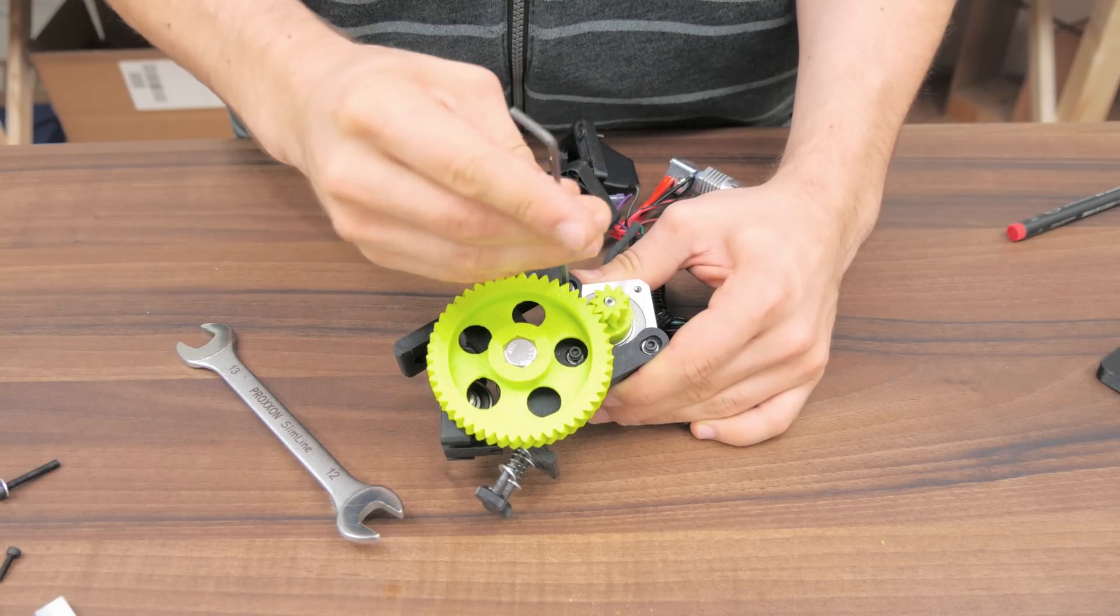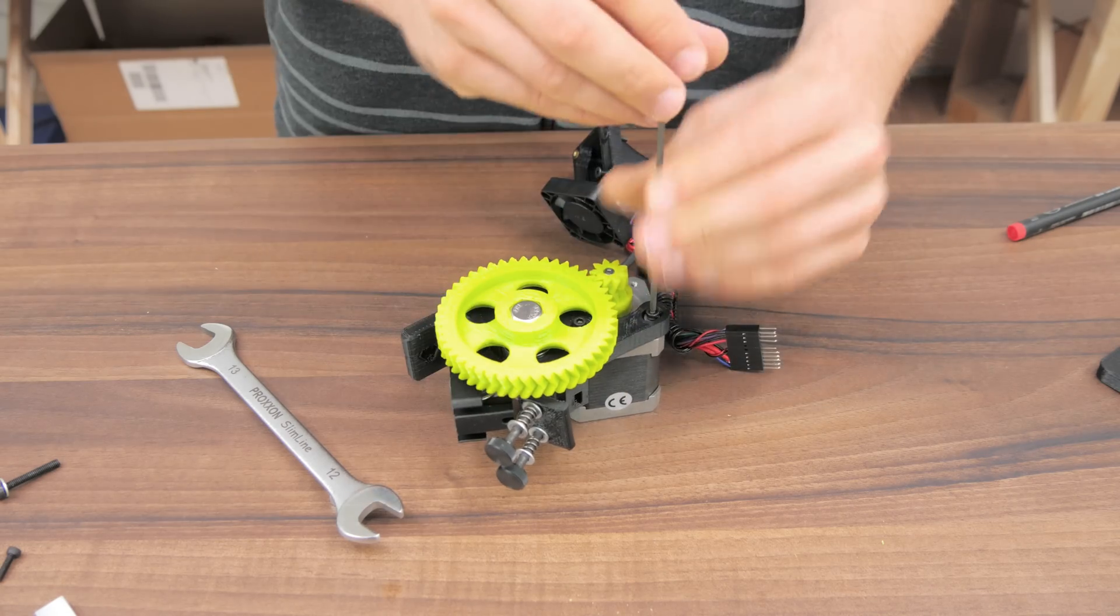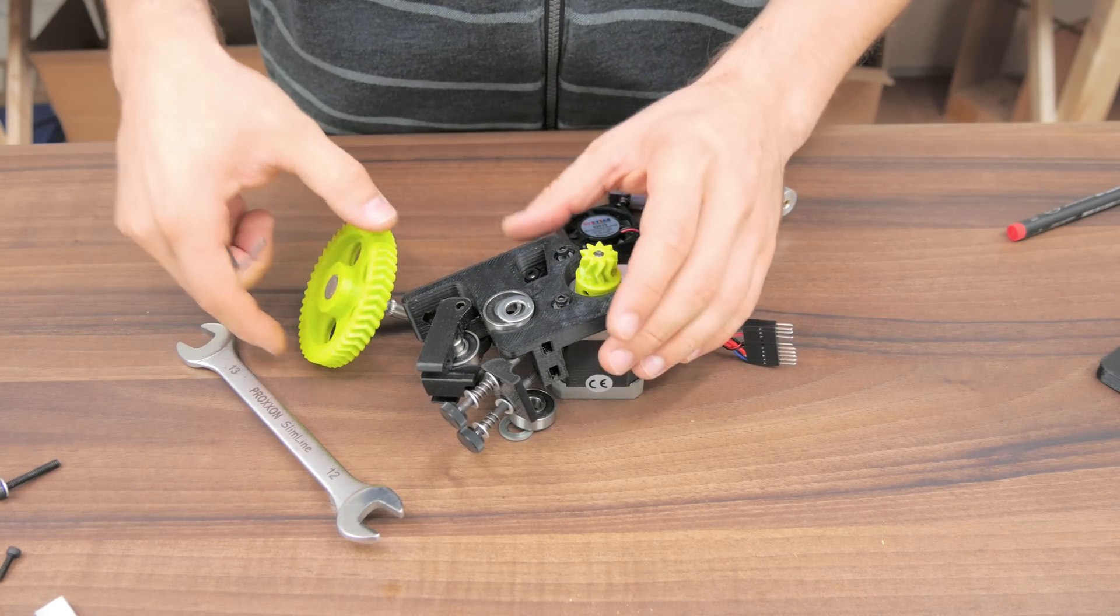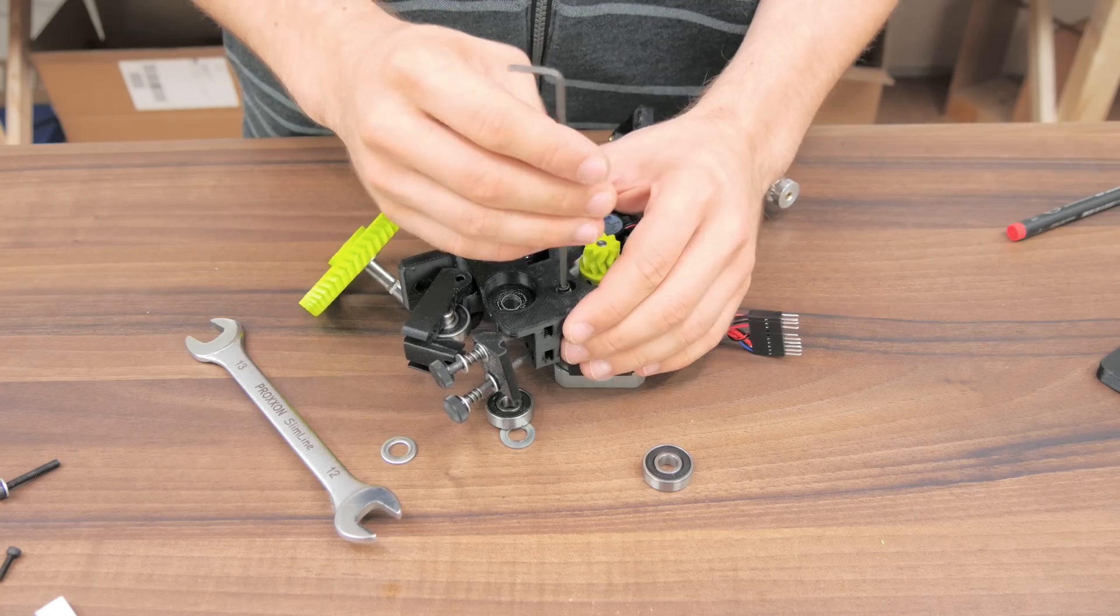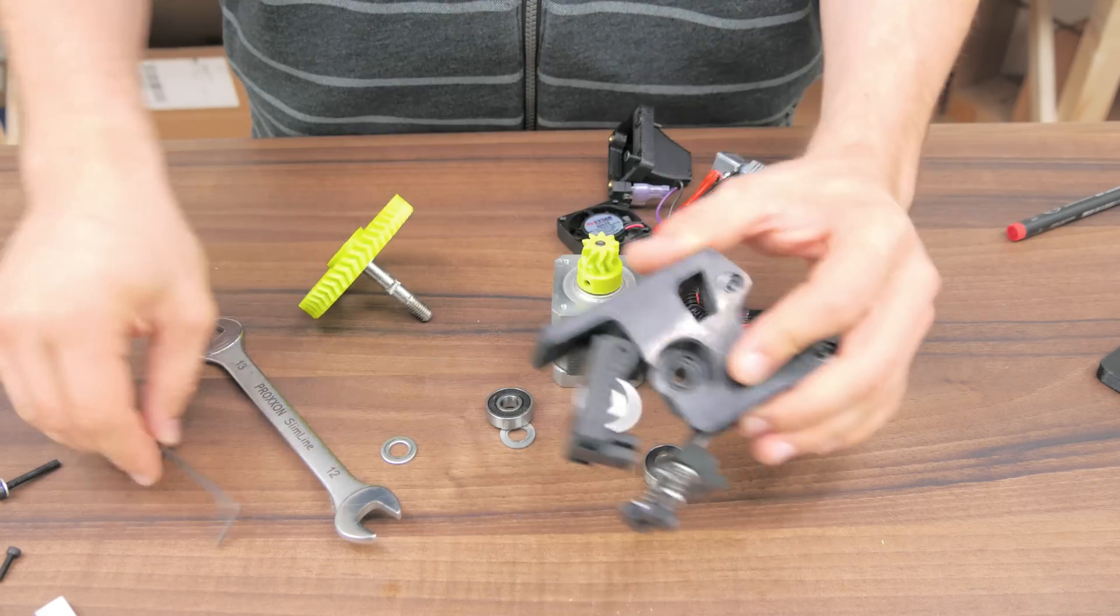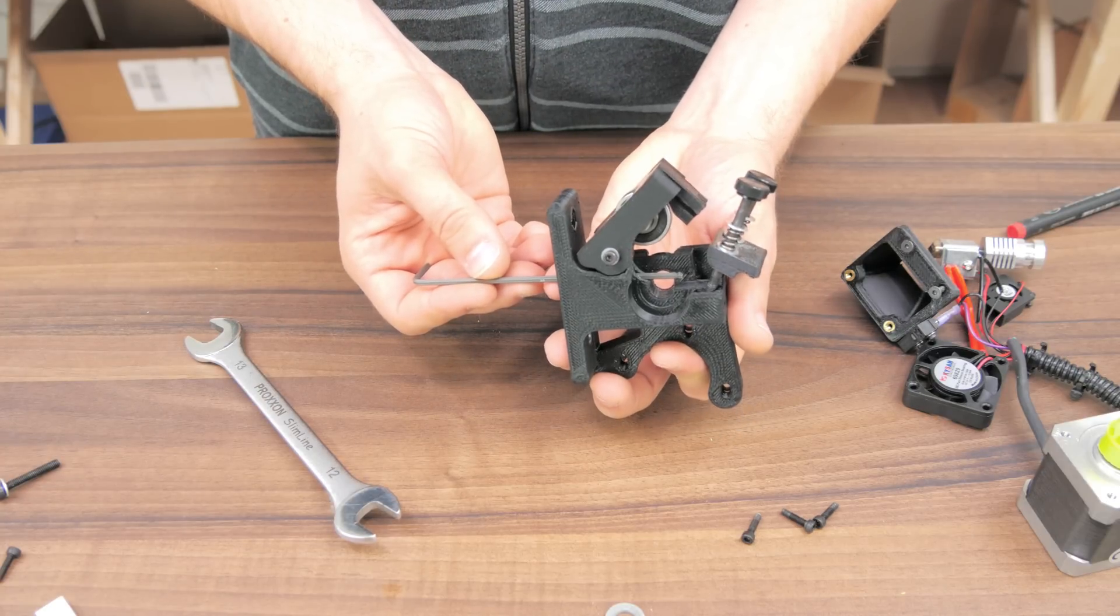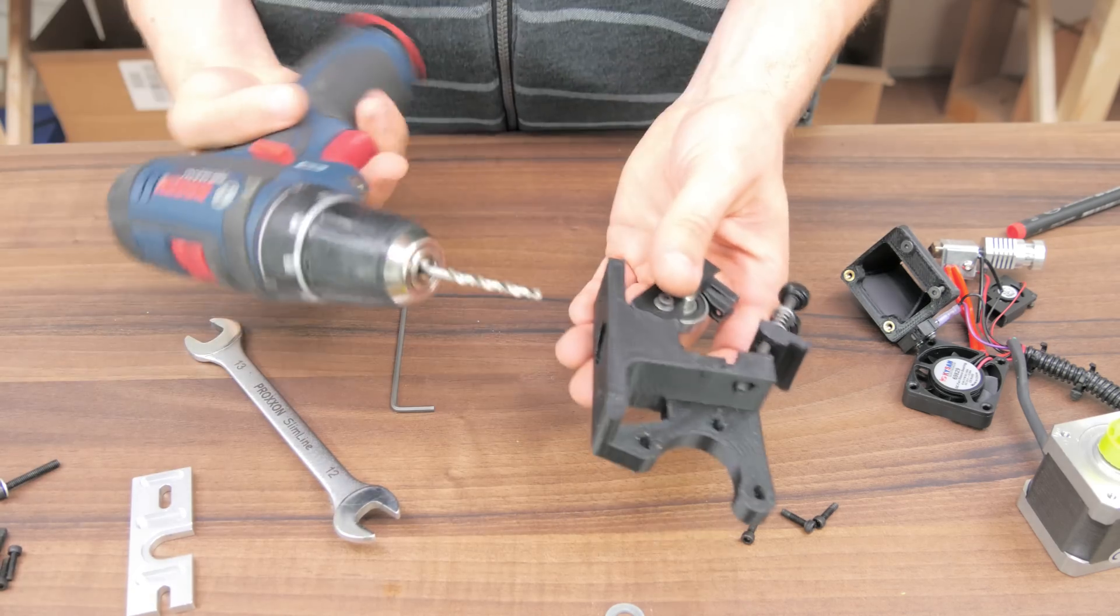I also decided to completely remove the motor just to make working on it a bit easier. So this right here is the filament path that we'll want to line with the 4mm teflon bowden tube. Grab your drilling tool with the 4mm drill bit and just shove it in there.